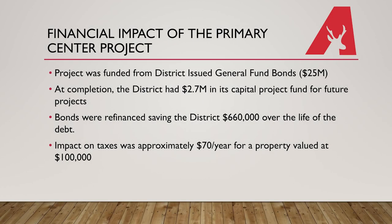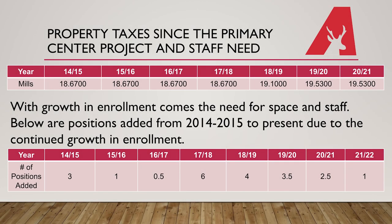Now let's look at the financing and financial impact of these projects. The primary center project was funded from district-issued general fund bonds of approximately $25 million. At the completion of the primary center project, the district had $2.7 million remaining in its capital project fund for future projects. The district took advantage of a favorable market and refinanced the bonds used for the primary center project, saving the district $660,000 over the life of that debt. The impact on taxes was approximately $70 per year for a property valued at $100,000. On this slide, we are showing the changes in our district's millage following the primary center construction project. Since the primary center project, our millage has only increased twice, and those increases are not directly tied to debt incurred from the primary project, but also from additional staff necessary due to our growing enrollment.